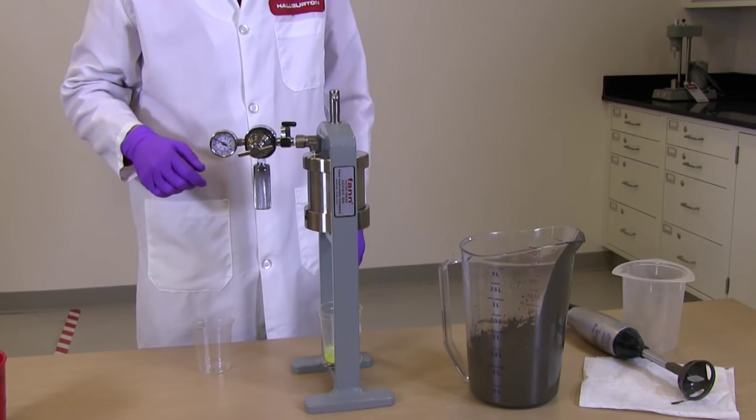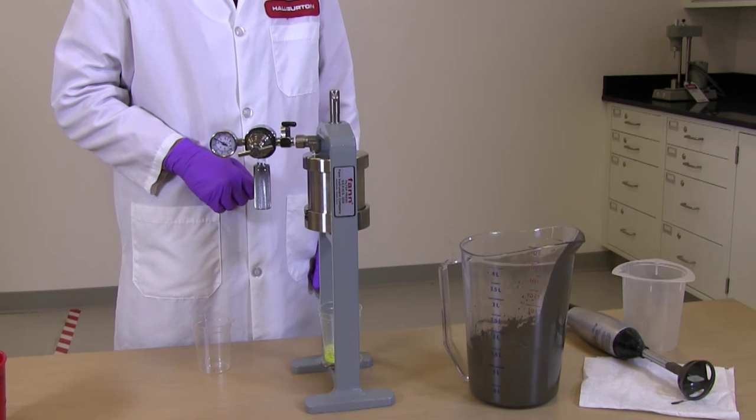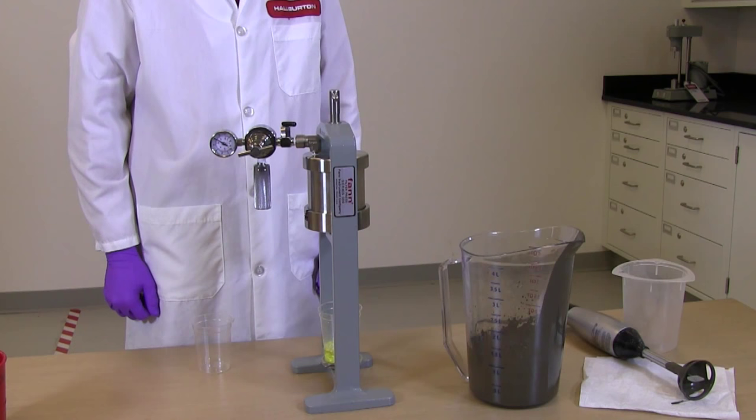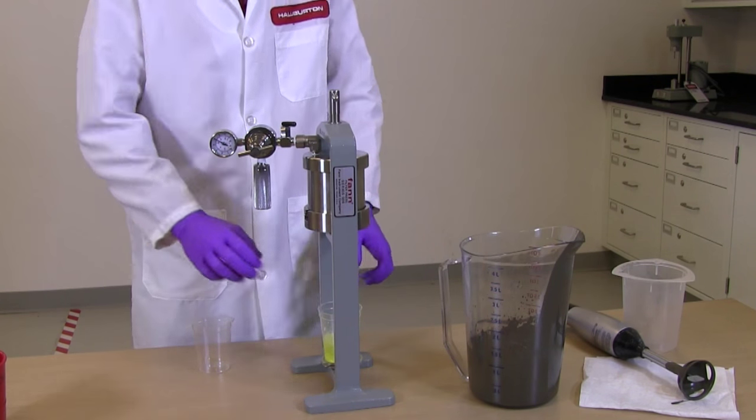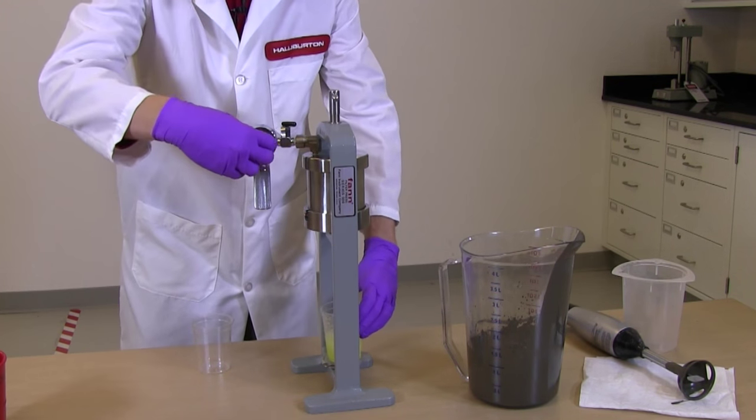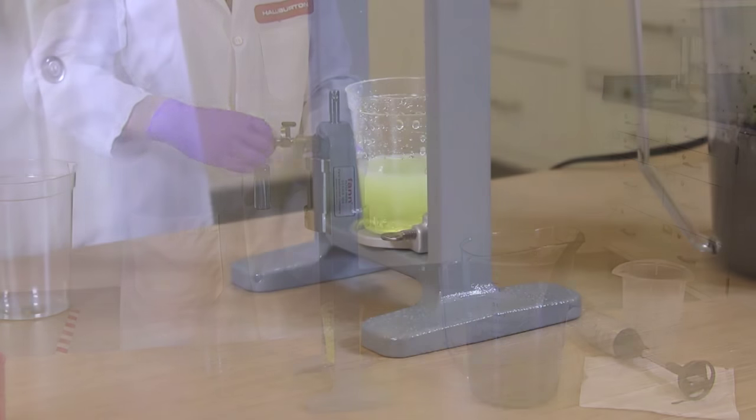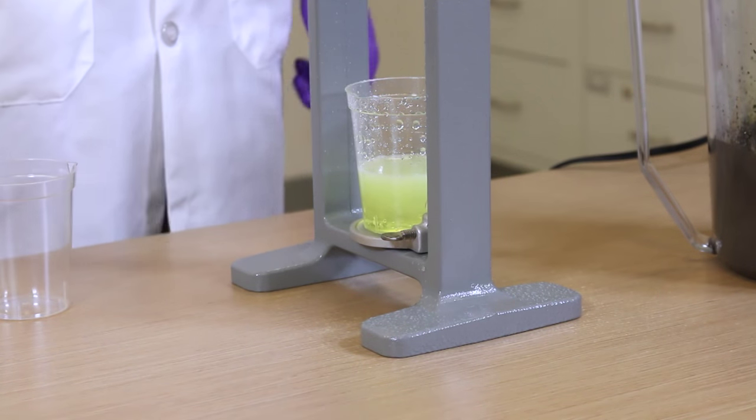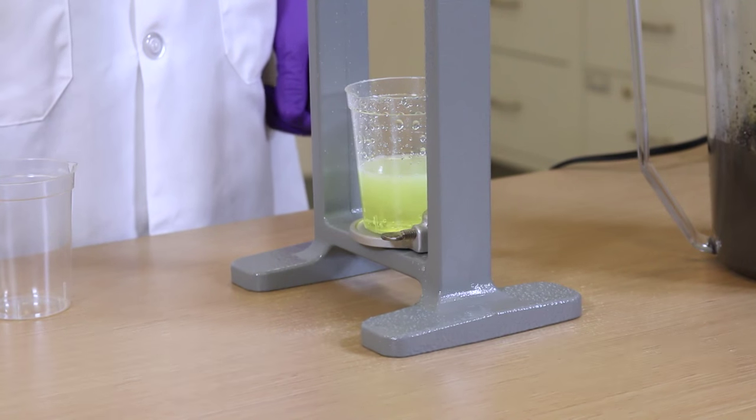Under pressure, we're losing the water phase of the cement. This is similar to what can happen down hole. In about 31 seconds, we have totally dewatered the cement. There's no water left. Let's see what we have.